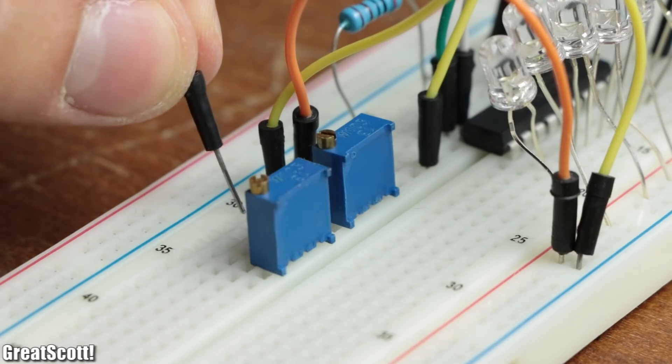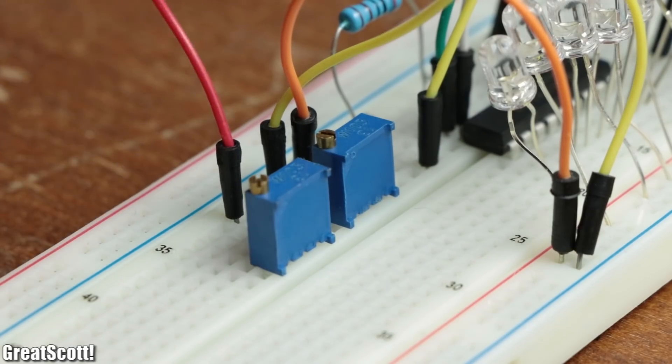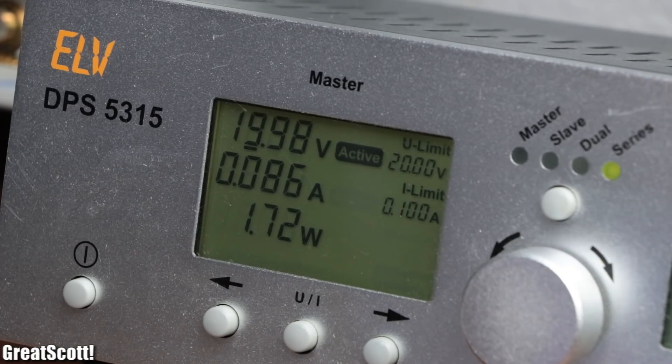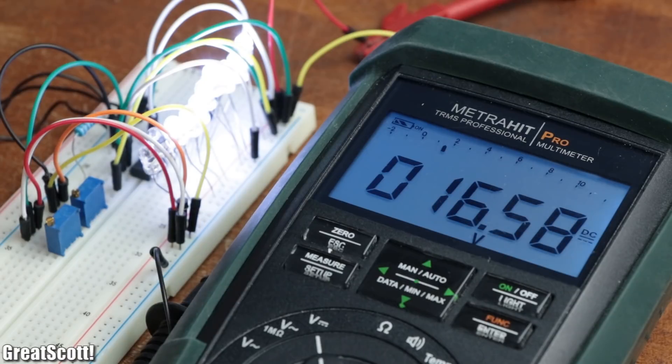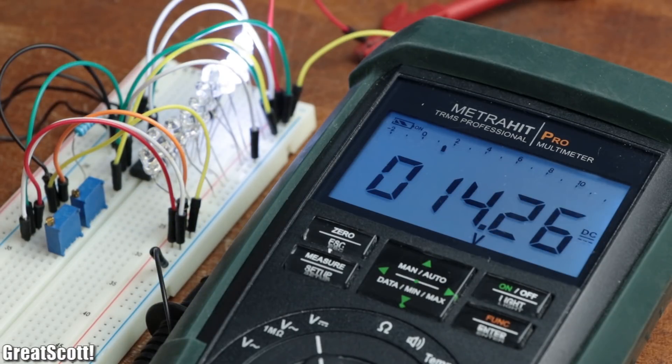For demonstration purposes, I built up the described circuit with a constant voltage source and a potentiometer as a signal input. And as you can see, when the battery voltage drops, the LEDs turn off one after the other.